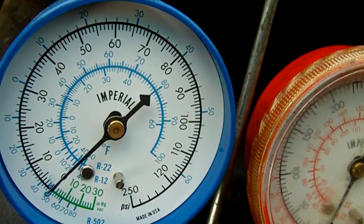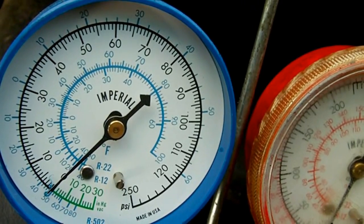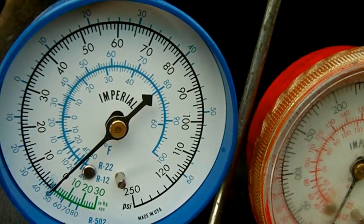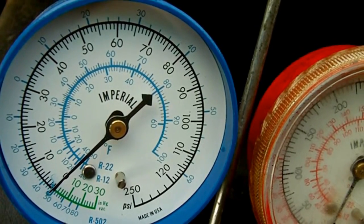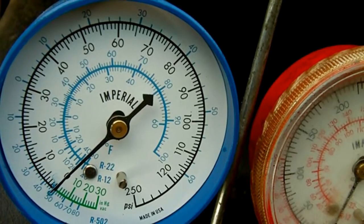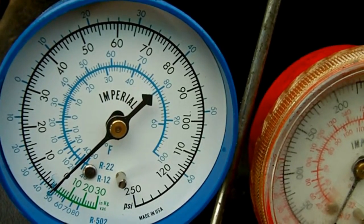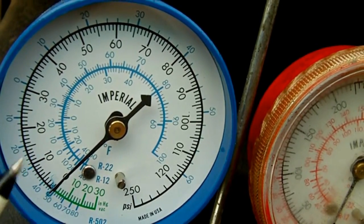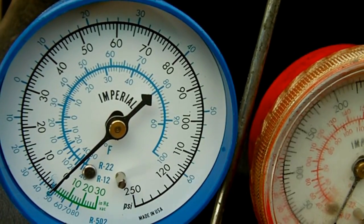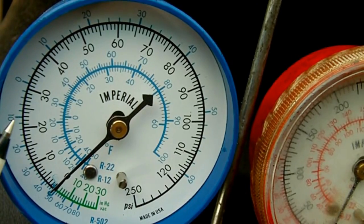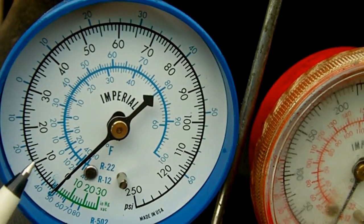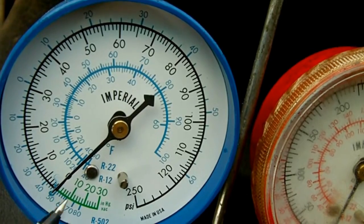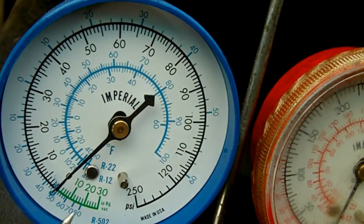It still shows the R-12 and R-502 and R-22. Now I don't think they're going to make any more like this. Like I said, this thing is about 20 years old. On the outside you can see the R-502 scale on the outside and the inside over here for vacuum, the green, the R-12.